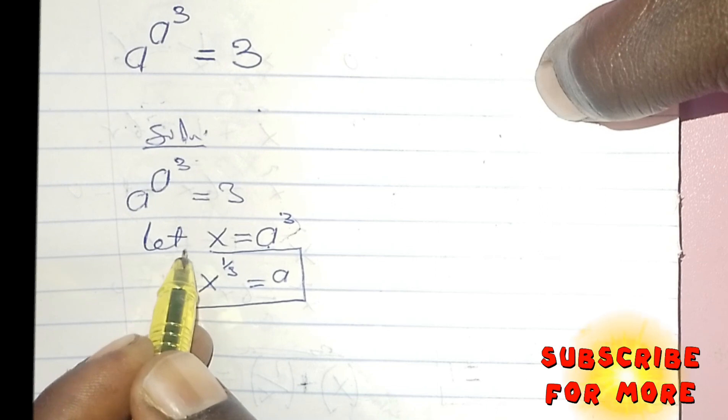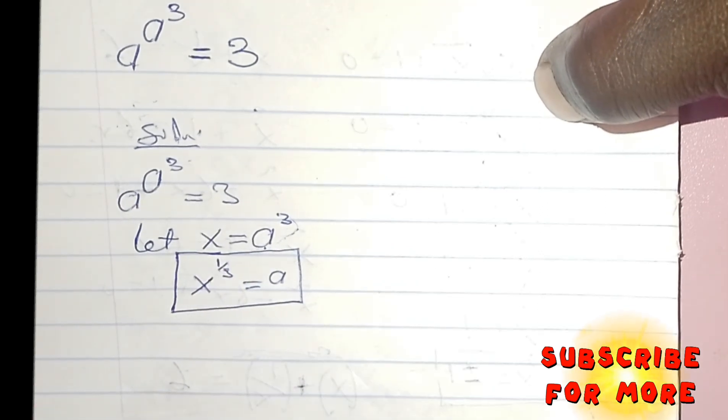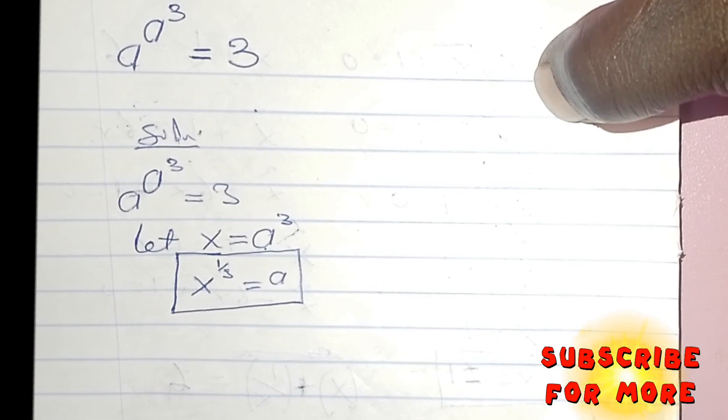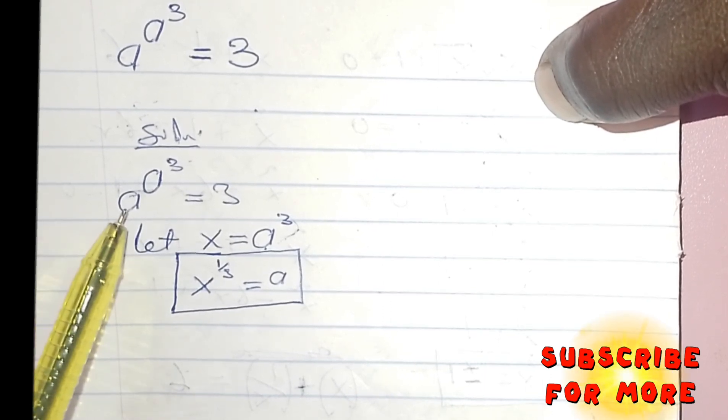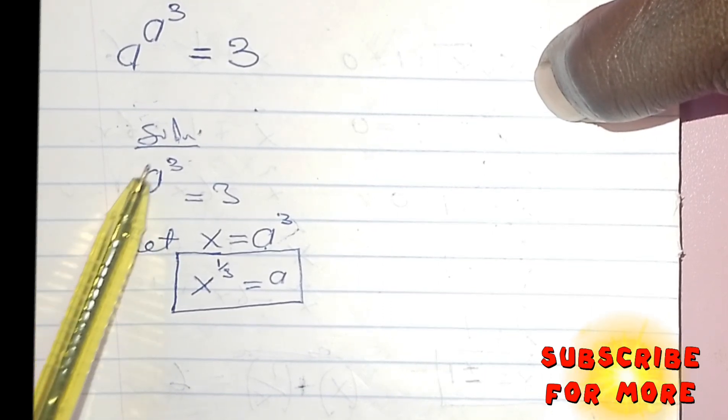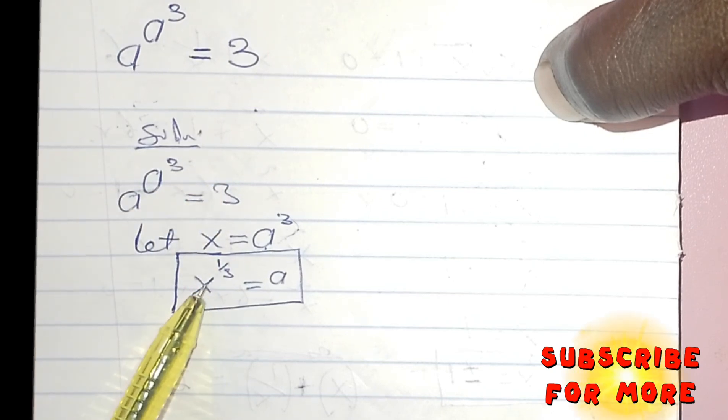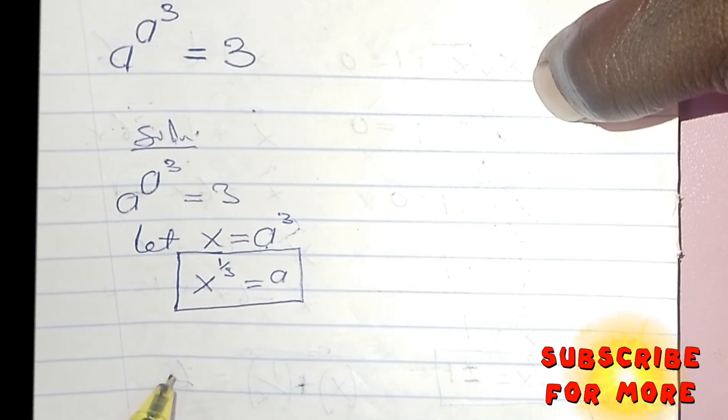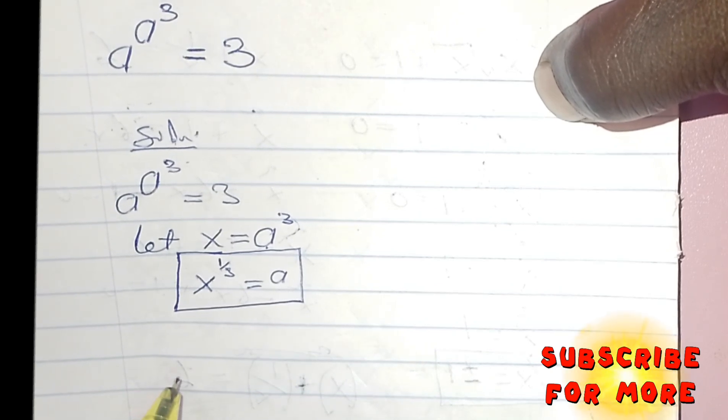This is a very important step. X to an exponent of 1 over 3 is equals to A. That means anywhere I see A in the original equation, I will plug in X to an exponent of 1 divided by 3 or cube root of X.